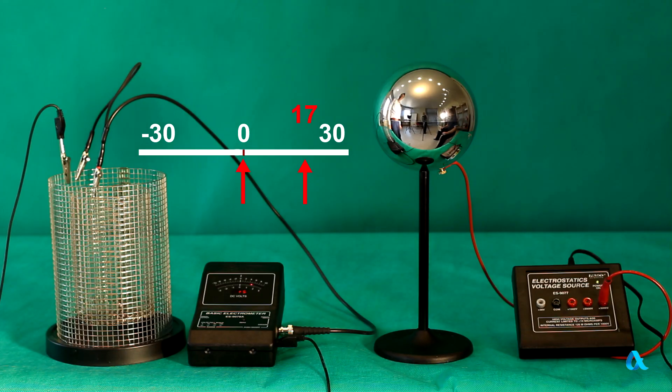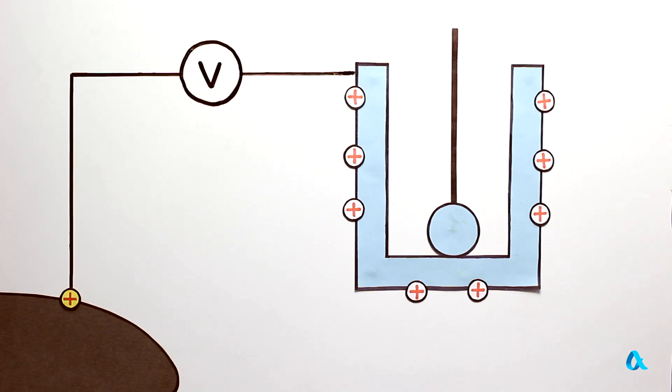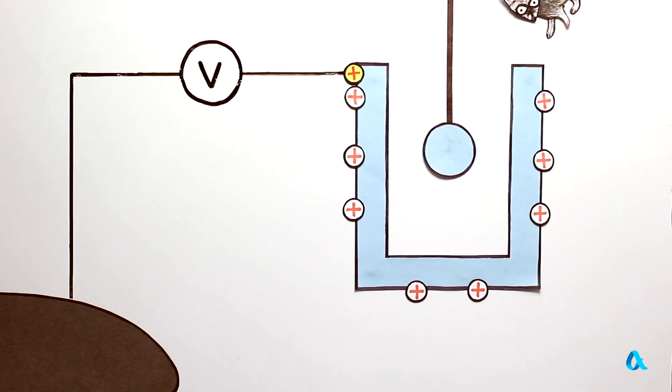Let's figure out what has happened. When we touch the cage wall with a metal plate, negative charges move onto the plate and it becomes electrically neutral. Now the cage itself turns out to be positively charged. So to move the test charge from ground to the cage we have to do the same work. That's why the electrometer's readings do not change.